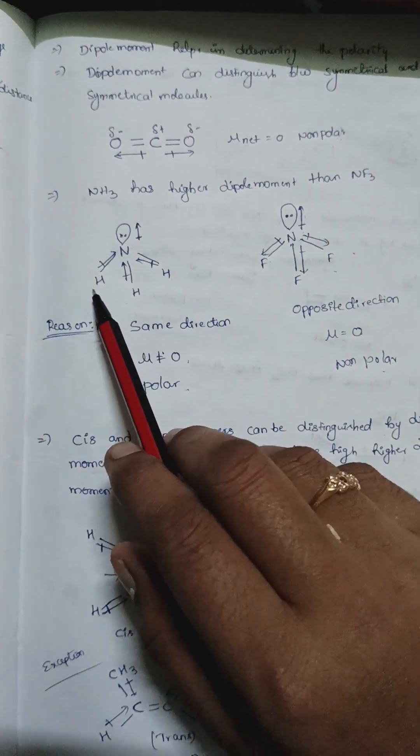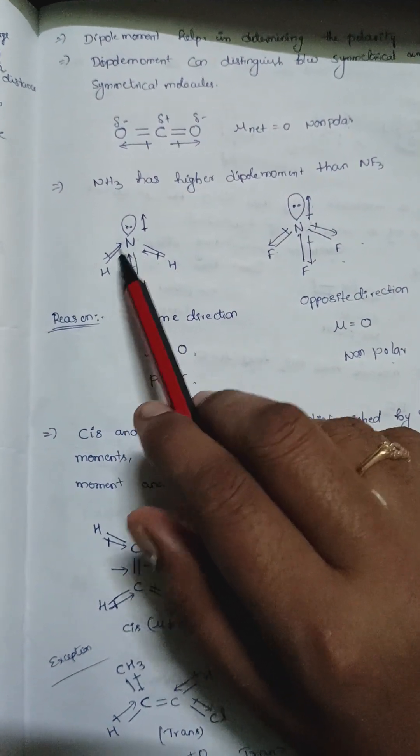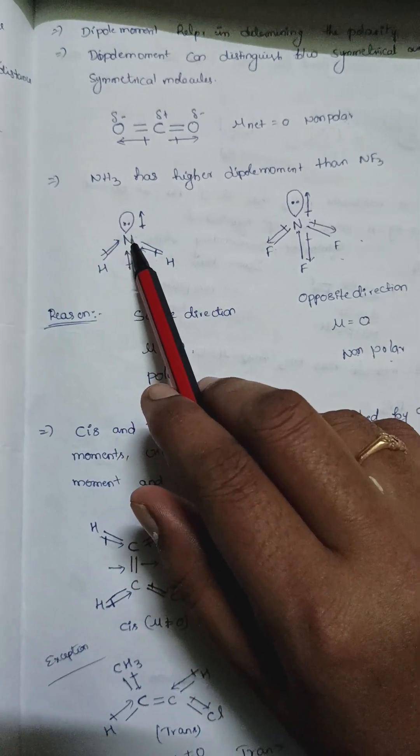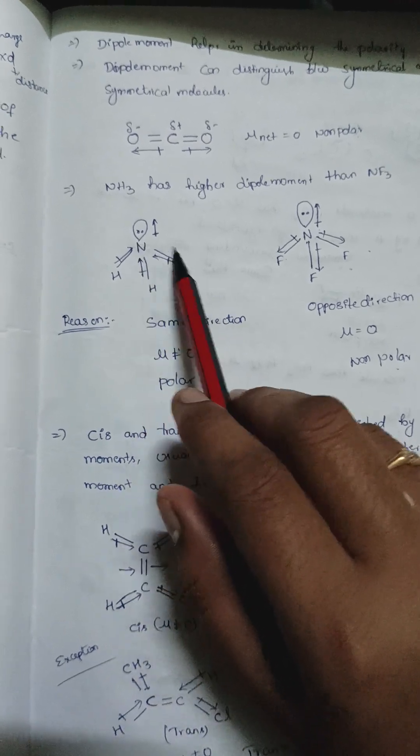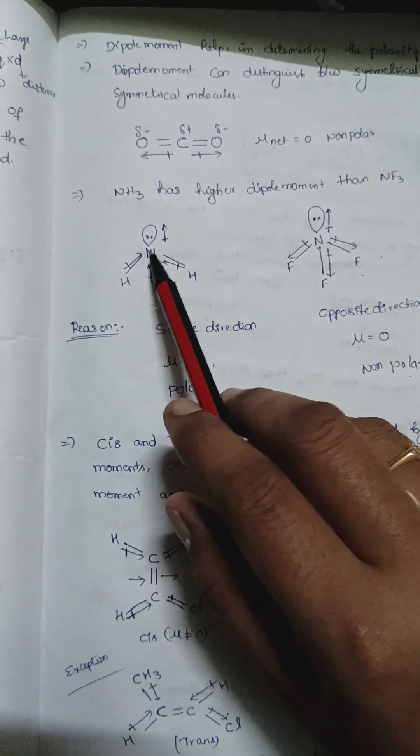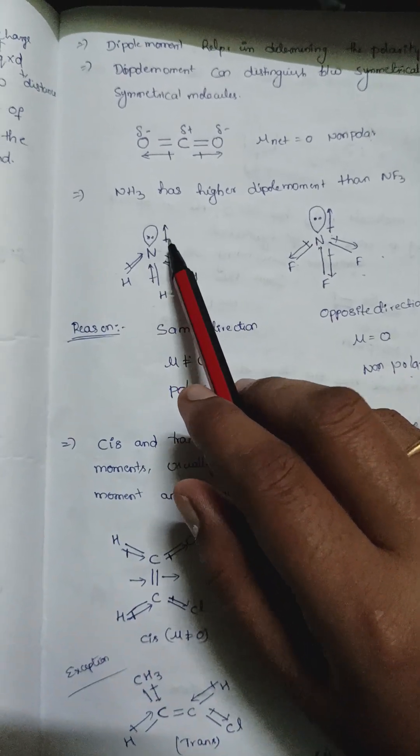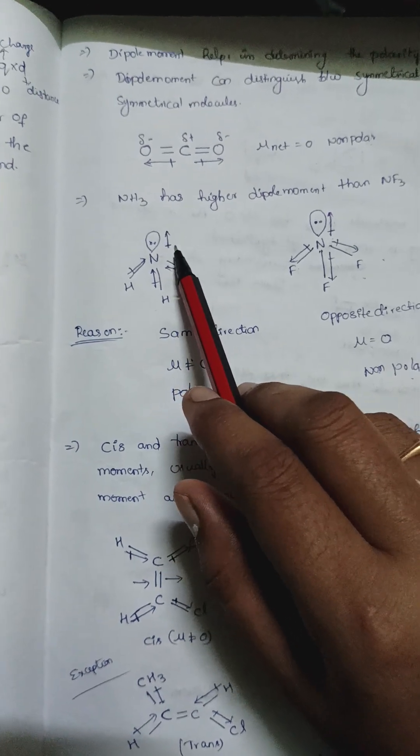In NH3, hydrogen is less electronegative than nitrogen, so the dipole vector is always towards the more electronegative atom. Therefore, it points towards nitrogen. Lone pairs are always in the upward direction; this is a basic rule.